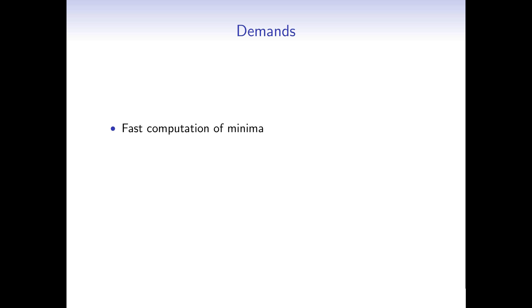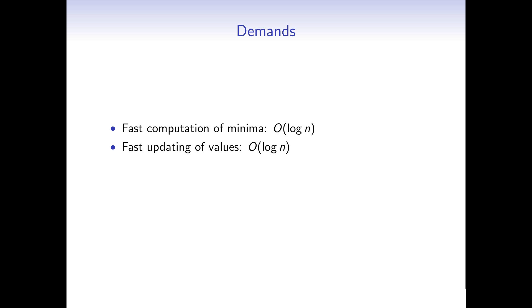What are our demands for the data structure? We want to compute minima fast and also update values fast. Using a plain array gives us minimum in linear time and updates in constant time. But linear time is quite slow, especially with a large array and millions of queries. We want at least logarithmic time, which won't allow constant-time updates, but logarithmic time will be fast enough for both. The data structure that allows both is called the segment tree.